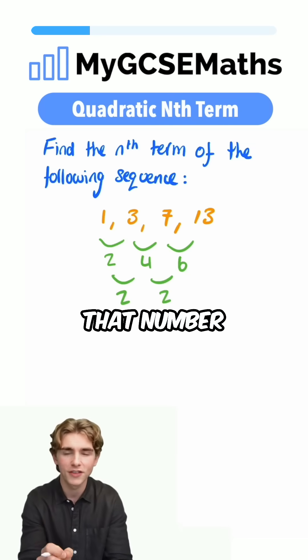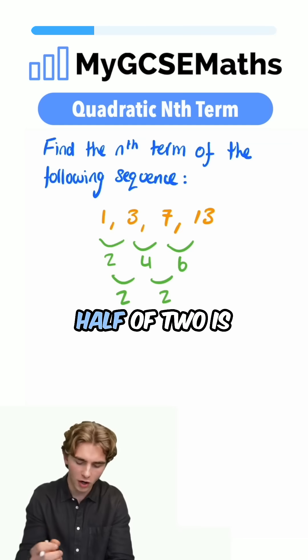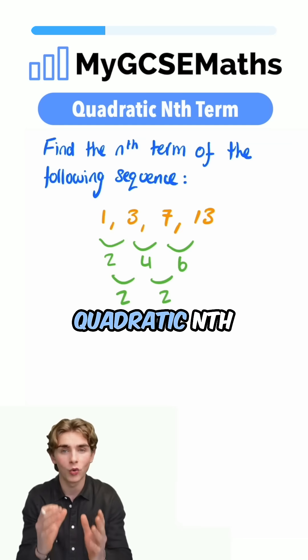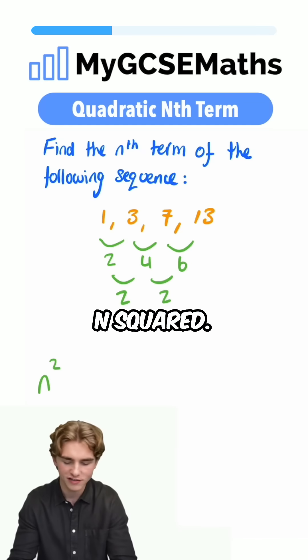Well, we're going to take that number 2, and we're going to half it. Half of 2 is 1, and that's going to give us the coefficient of n squared in our quadratic nth term. So we have 1n squared.